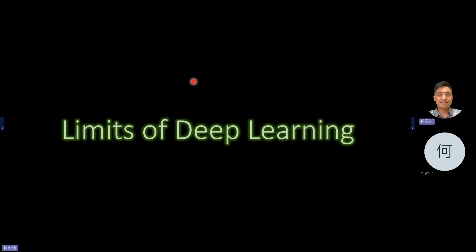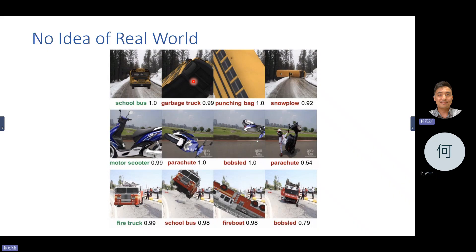There are some limitations of deep learning so far. Models have no idea of the real world because most computer vision data is trained using 2D images. If you rotate the image, it's not the model's fault — they were only trained with 2D images, so they don't know the real-world 3D. But that can cause errors — a school bus becomes classified as a garbage truck, or a motorcycle looks like a parachute.